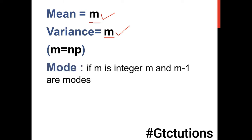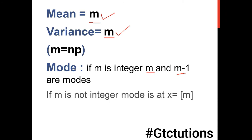We can also find the mode. If the mean value m is an integer, then m and m minus 1 are two modes — it is bimodal. If m is not an integer, then the integral value of m is the mode.